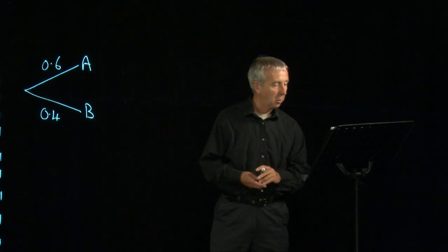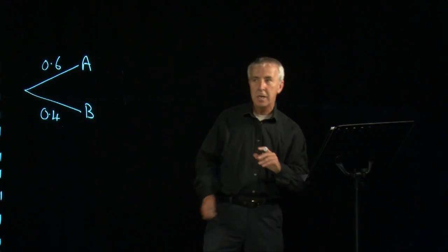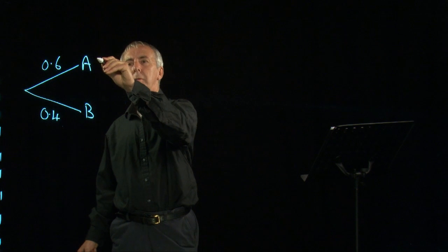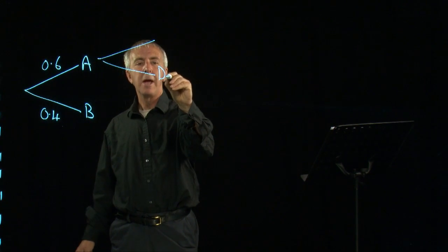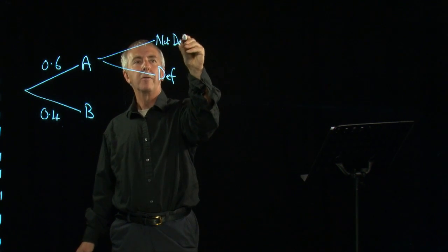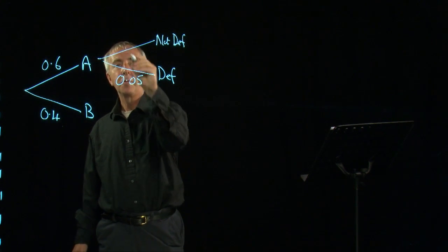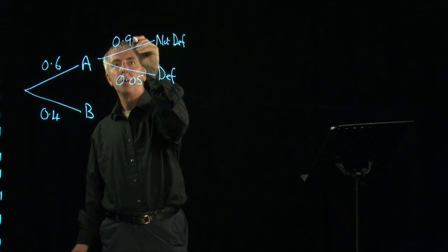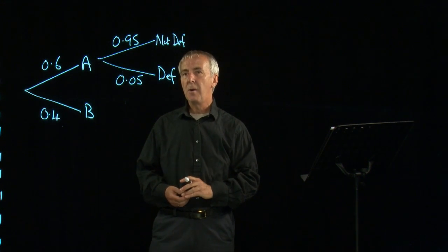And then let's suppose for example that A produces 95% good items. You can either have a defective item or a not defective item from A, and the chance of a defective item is 5% and the chance that the items it produces are okay is 95%.